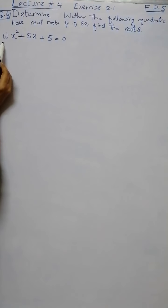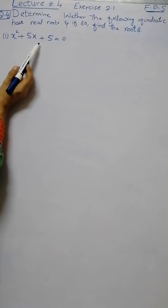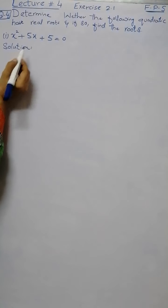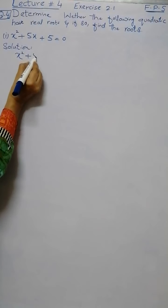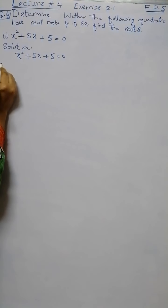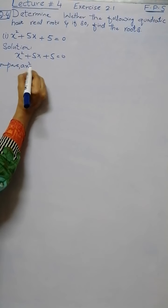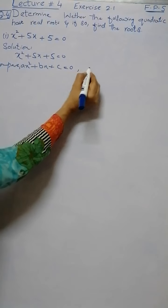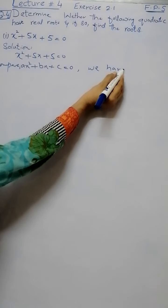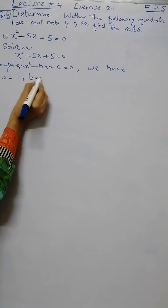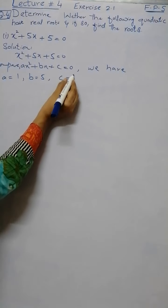Here is the first part of the question: x² + 5x + 5 = 0. After writing the solution, we write the equation and compare it with the general form of quadratic equation ax² + bx + c = 0, so that we have the values a = 1, b = 5, c = 5.